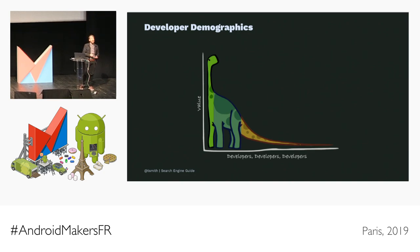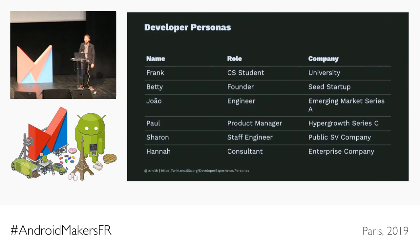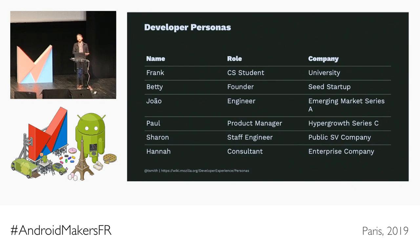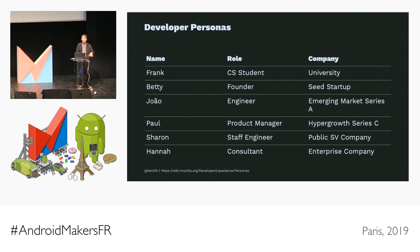In addition to grouping by demographic, we create common personas to describe the way people work and what they care about. For example: a startup founder wanting to quickly bootstrap a new idea; a student developer wanting to be guided as they learn; an enterprise developer requiring significant rigor analyzing a library for their big company; or a product manager who just needs a specific feature. All these folks would value different things — from ease of integration to flexibility to feature polish. The Mozilla Foundation has a great set of public developer personas on their wiki that I'd recommend looking at.